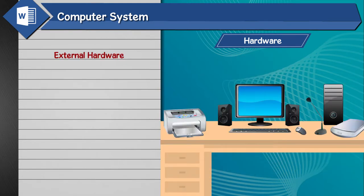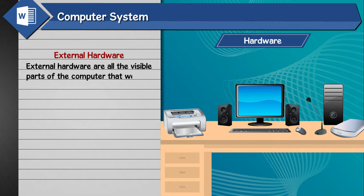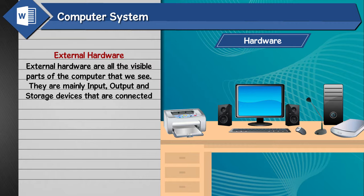External Hardware. External hardware are all the visible parts of the computer that we see. They are mainly input, output, and storage devices that are connected externally to the computer.